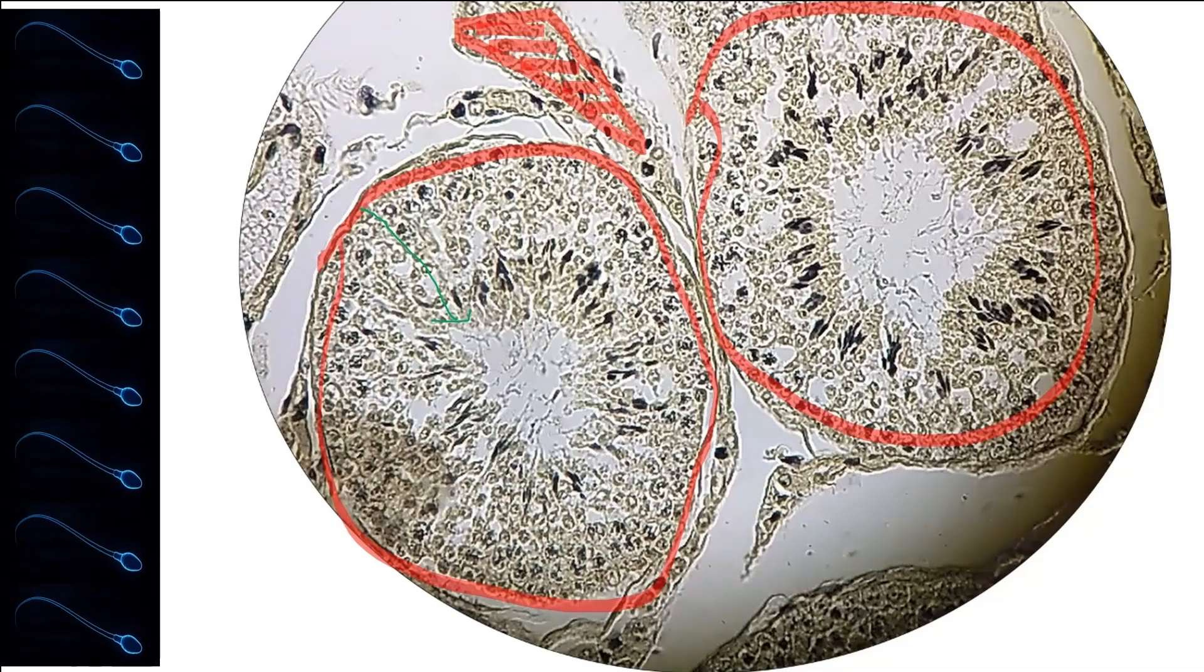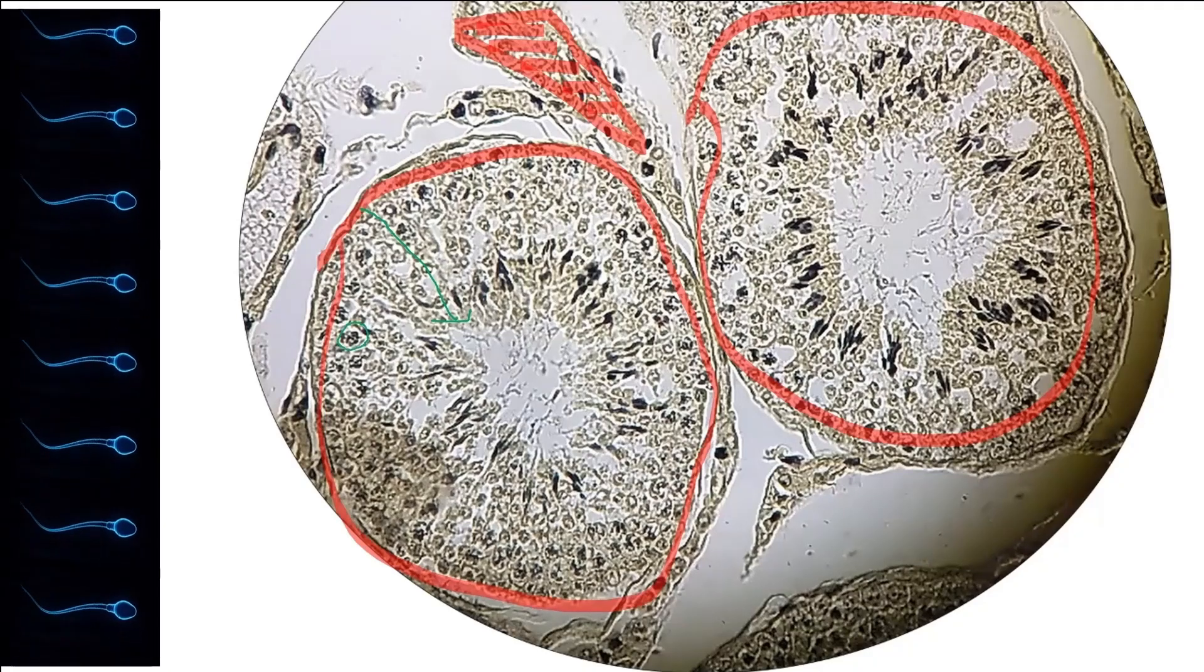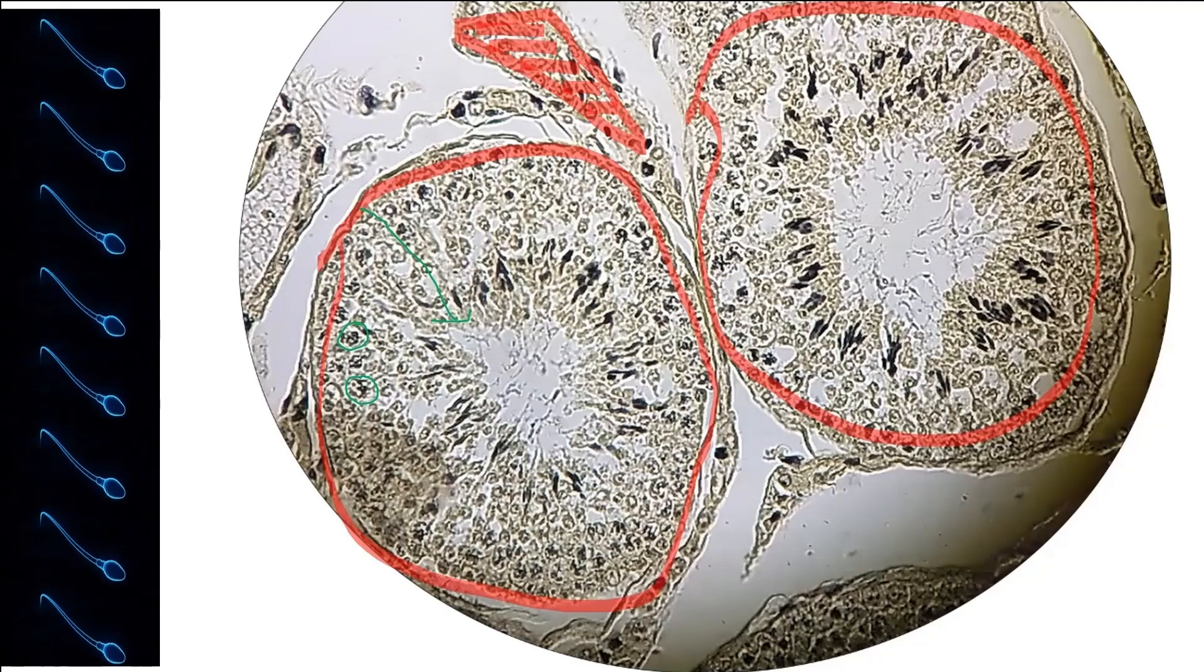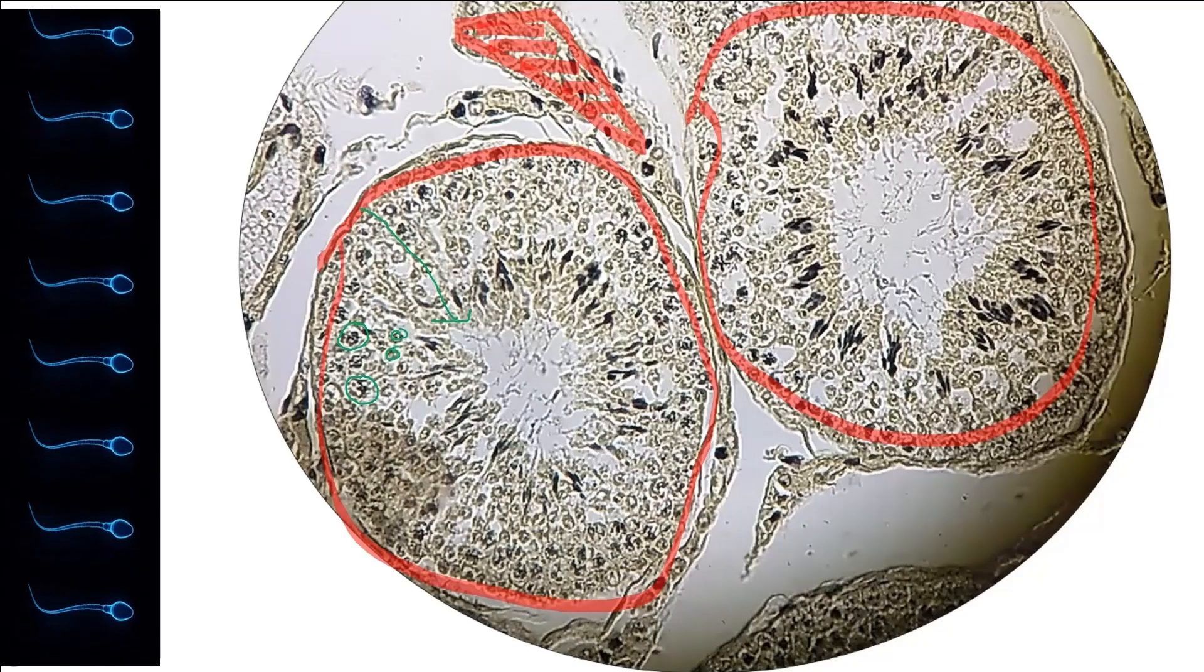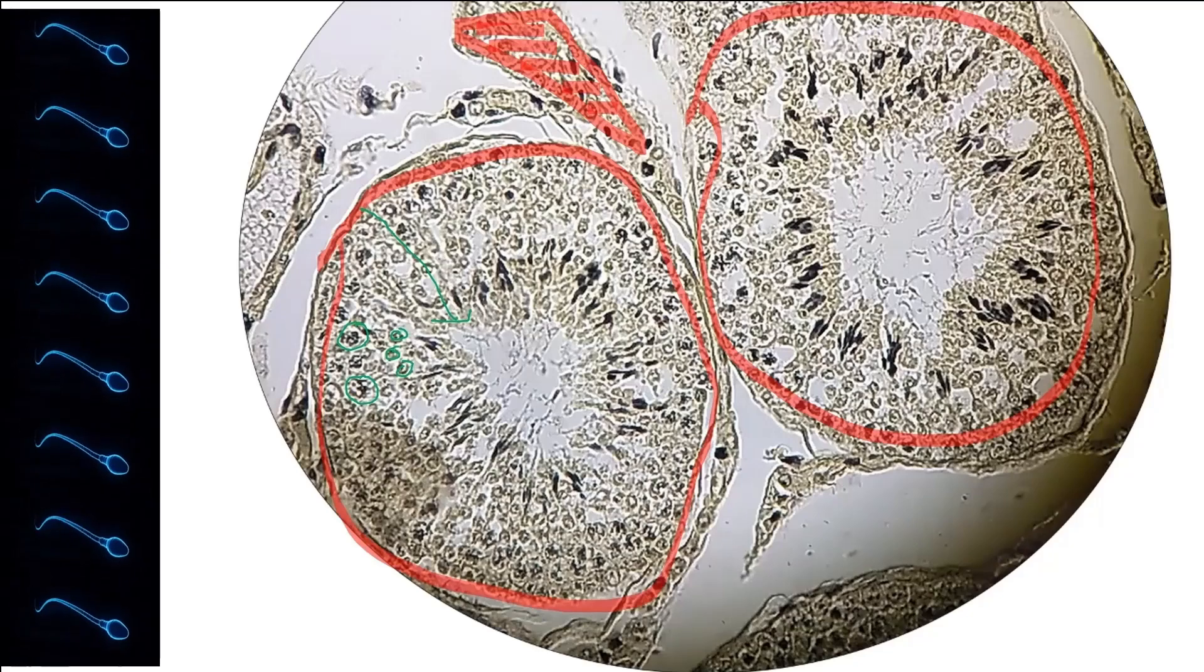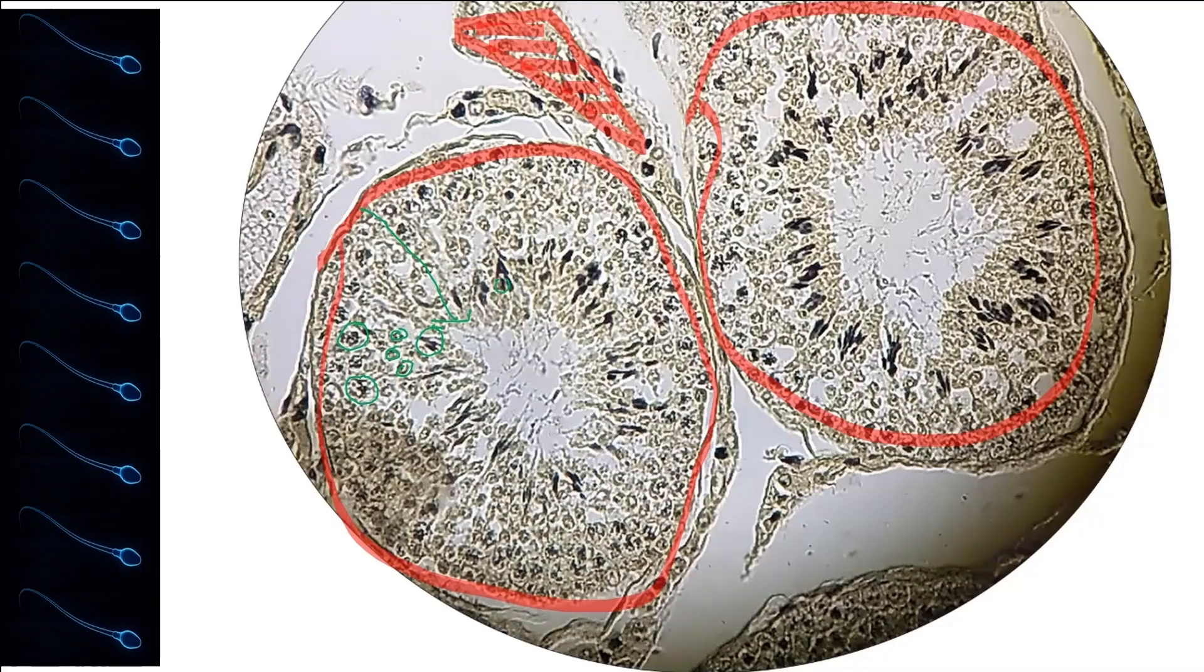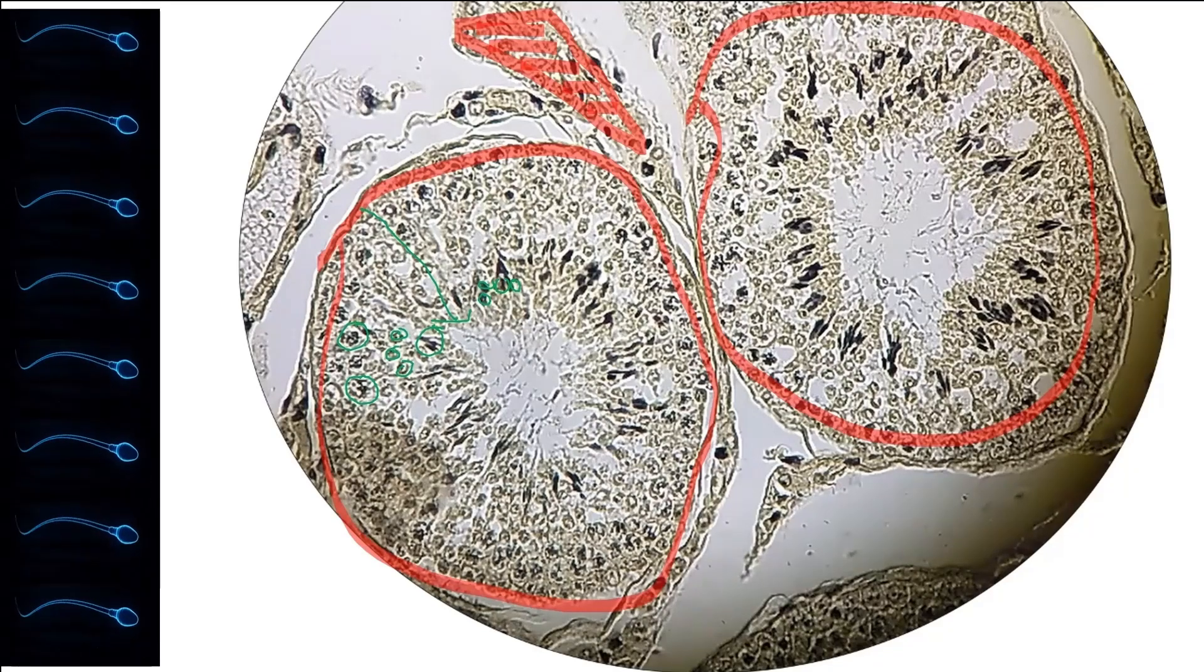If you look at this diagram, you can see there is a larger cell which is the primary spermatocyte. And then there is a slightly smaller cell which is the secondary spermatocyte. And then you can see a darker cell that is very small. This is spermatozoa.